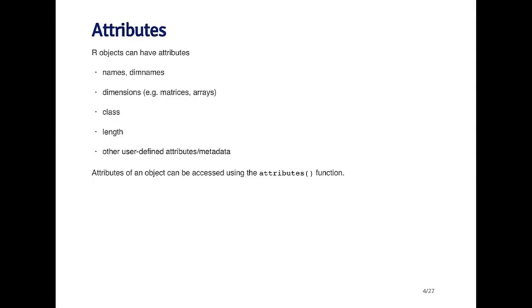Every object also has a length. For a vector, it's quite simple. The length of the object is just the number of elements in the vector. And then there may be other user defined attributes or metadata, things that you can define separately for an object using various attribute functions. There is a general function called attributes, which allows you to set or modify the attributes for an R object.